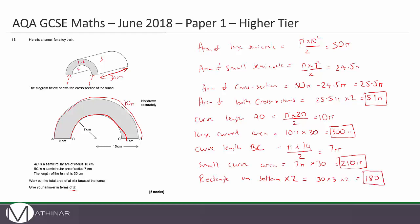And then the total area is the sum of the things that I put in boxes. So that's 51π plus 300π plus 210π plus 180. That's your final answer in terms of π.